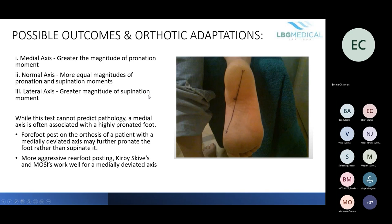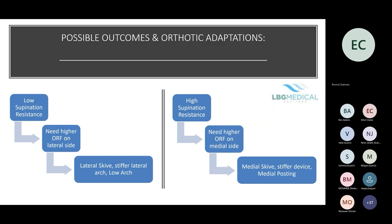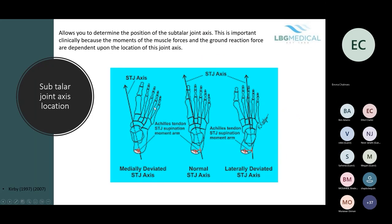This test cannot predict pathology, but a more medial axis is associated with a highly pronated foot and a more lateral axis with a supinated foot. Importantly for orthotic therapy, anything you place on the lateral side of the orthotic — lateral to the subtalar joint axis — will pronate the foot, and anything on the medial side will supinate it. For example, placing a medial or varus wedge on a patient with a medially deviated subtalar joint axis will likely further pronate the patient rather than help achieve a supination moment.